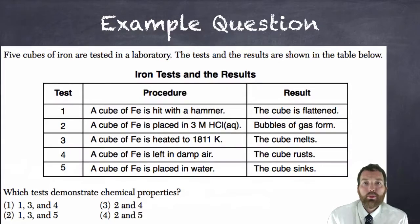Here's an example Regents question that hits on this topic. We have five cubes of iron that are tested in the laboratory. The tests and the results are shown in the table below. Go ahead and read that table below and try to figure out which tests demonstrate chemical properties.